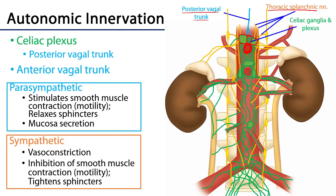Also serving the stomach are fibers from the anterior vagal trunk. These vagal trunks enter the abdominal cavity along with the esophagus, transmitted through the esophageal hiatus at approximately the T10 level. The anterior trunk is anterior to the esophagus and the posterior trunk is posterior to it. Given the proximity of the abdominal esophagus to the stomach, these fibers do not have a long distance to travel to reach their targets within the walls of the stomach.